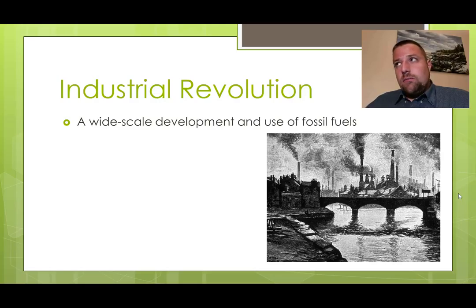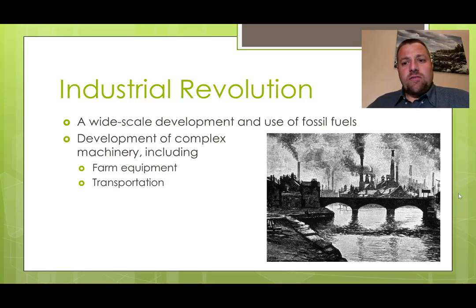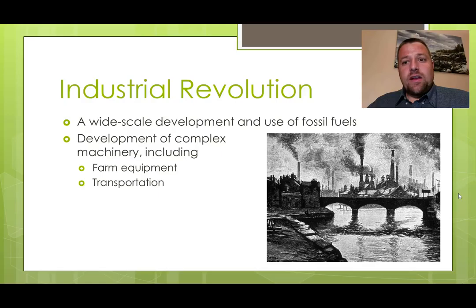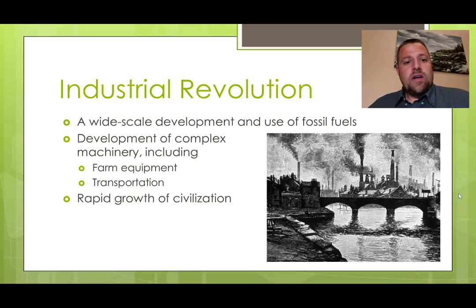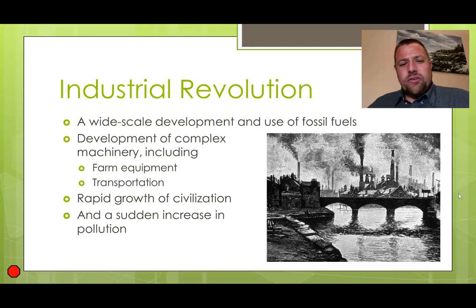The Industrial Revolution was in the 1700s–1800s. This is when we saw the wide-scale development and use of fossil fuels and the invention of many complex machinery. For today's lecture, we're looking at things like farm equipment — things that allowed us to grow food and grow our population — but also transportation: trains, eventually cars, steamships. All of these things led to the rapid growth of civilization. The Industrial Revolution is also really when we started to see a large increase in pollution.